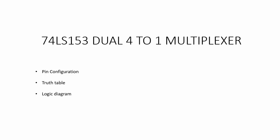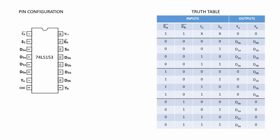In this video, let us look at pin configuration, truth table and logic diagram of 74LS153 IC. 74LS153 is a dual 4-to-1 multiplexer IC, so it will have two 4-to-1 multiplexers.